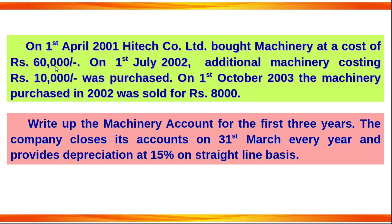Write up the machinery account for the first three years. The company closes its accounts on 31st March every year and provides depreciation at 15% on a straight line basis — that is, the Fixed Installment Method.